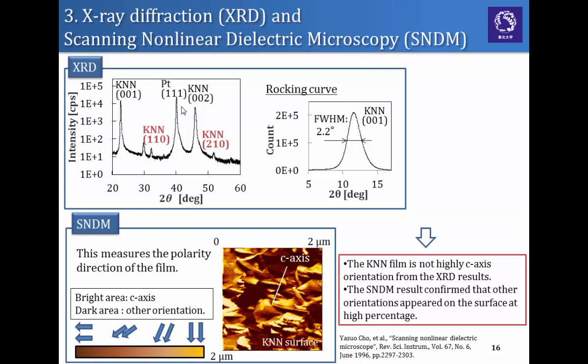And this is the result of the SNDM, which can measure the polarization directions by scanning. This is the result. Bright color shows the C-axis and dark color shows other orientations such as 110. So from this picture, I also confirm this XRD data and it suggests that other orientations also appeared in high percentages.